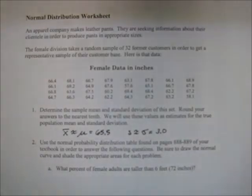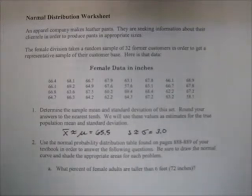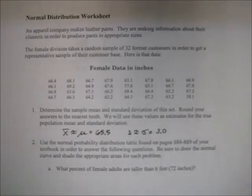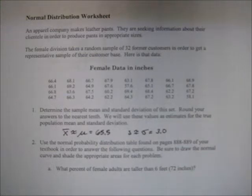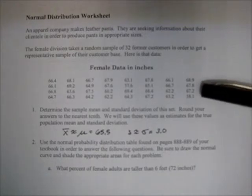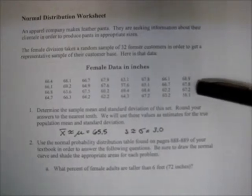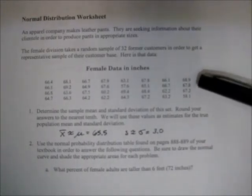This is a normal distribution worksheet dealing with an apparel company that makes leather pants and wants to produce the proper number of appropriately sized pants. First we'll deal with the female data, where the female division took a random sample of 32 former customers to get their height data and get a representative sample of their customer base. Here you have all the data.